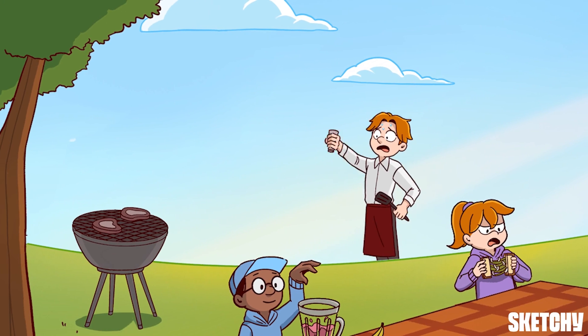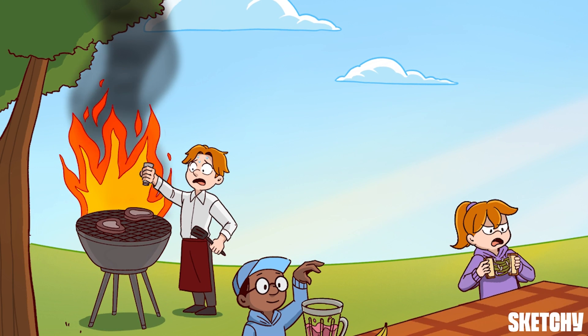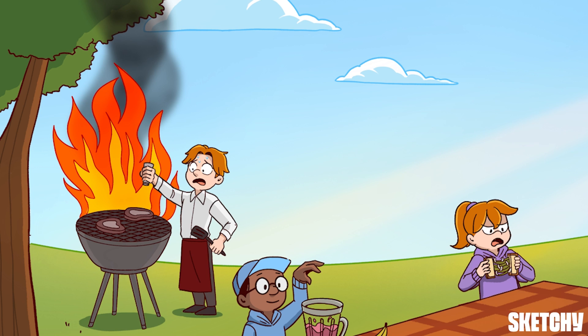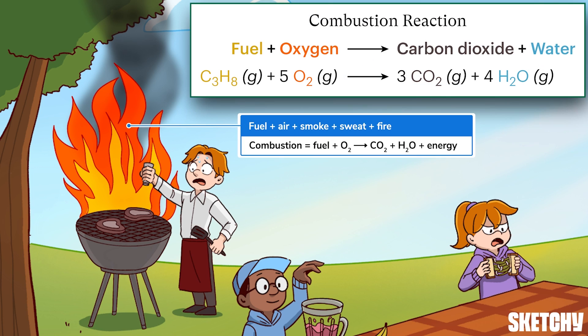Something smells like it's burning. I'm guessing Mr. Dalton will ironically call those steaks well done. But at least that burning meat is demonstrating a combustion reaction. These involve a substance reacting with oxygen gas and releasing large amounts of energy as heat or light. This substance is typically a hydrocarbon fuel — a compound containing only hydrogen and carbon — such as the propane used in a grill. When it reacts with oxygen, hydrocarbons will create carbon dioxide and water as byproducts. You can recall this with those puffs of CO₂-y smoke and the watery sweat collecting on Mr. Dalton's forehead.